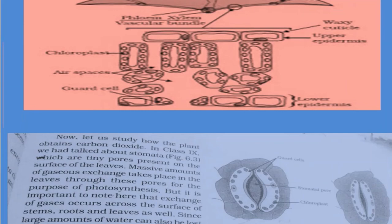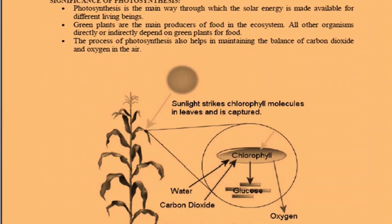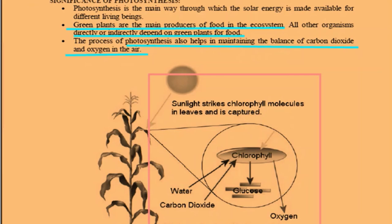Here we can see the significance of photosynthesis. Photosynthesis is the main way through which solar energy is made available for different living beings. Green plants are the main producers of food in the ecosystem — we cannot make food ourselves; we consume green plants. The process of photosynthesis also helps maintain the balance of carbon dioxide and oxygen. Without photosynthesis, there would be no release of oxygen, and the CO2-O2 balance would not be maintained.